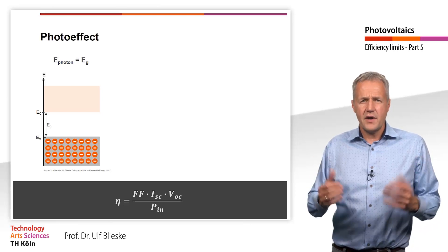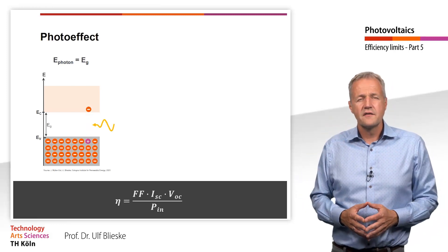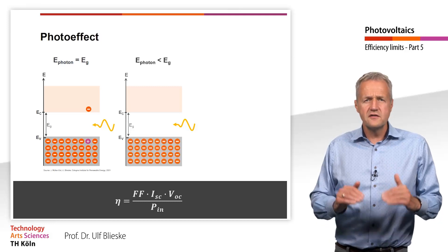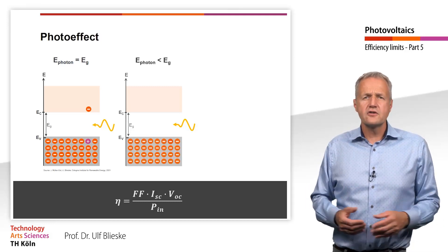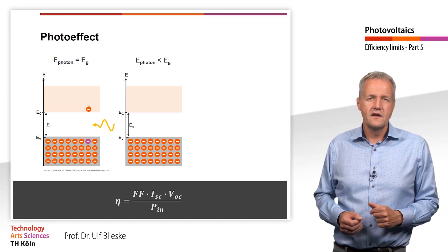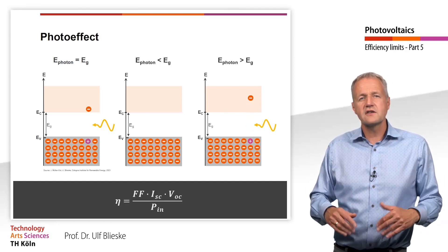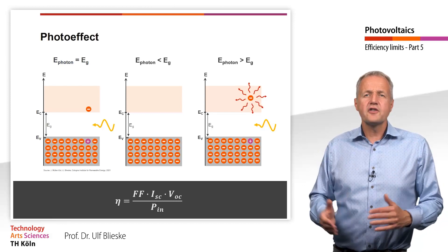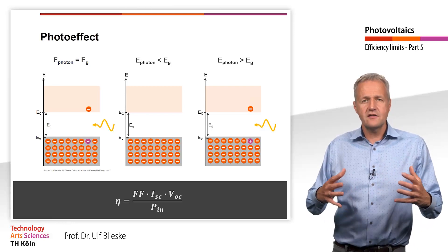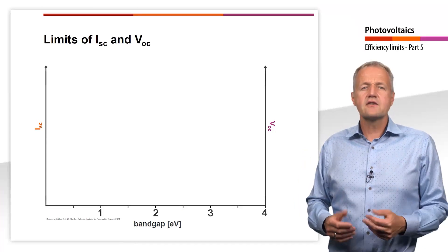Let's take another step back. You remember, the photo effect lifts electrons from the valence to the conduction band. If a photon has less energy than the band gap, the energy is not sufficient to lift the electron into the conduction band, and the photon transmits through the semiconductor — one could also say that the semiconductor is invisible to the photon. If a photon has more energy than the band gap of the semiconductor, an electron is lifted into the conduction band, but it immediately falls back to the energetically most favorable state in the conduction band and releases the excess energy as heat. Both quantities, open-circuit voltage and short-circuit current, depend on the band gap.